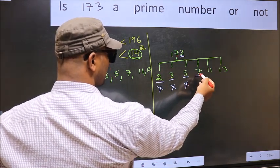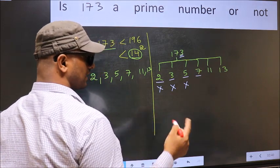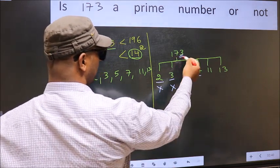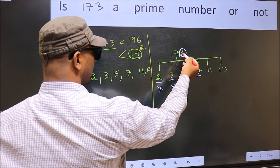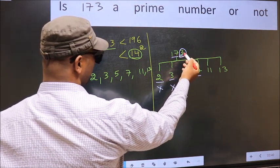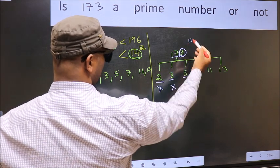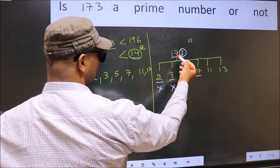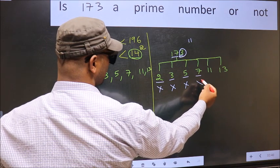Next, number 7. To check divisibility by 7, you double this. 3 into 2, 6. Subtract from 17. 17 minus 6, we get 11. 11 is not divisible by 7. So, this number is also not divisible by 7.